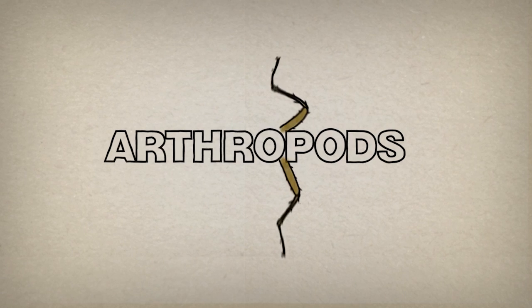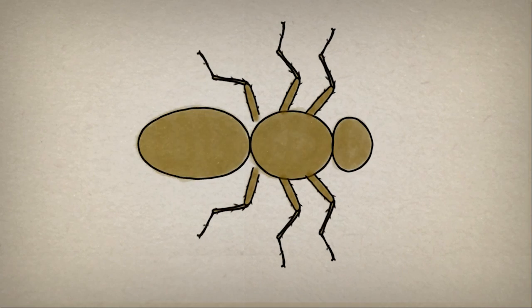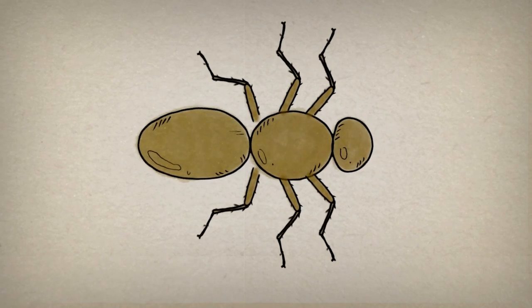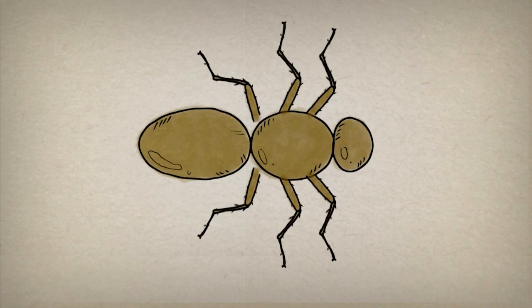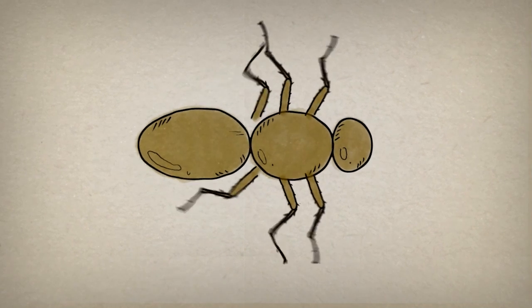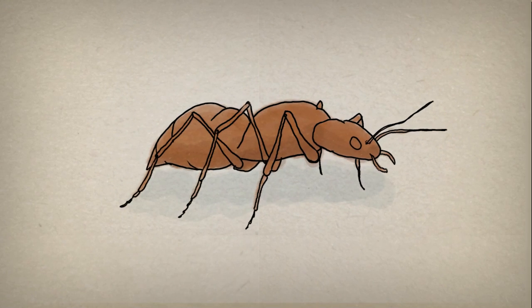Insects are arthropods, which means they have legs with joints, bodies in segments, and a hard outer covering called an exoskeleton, like having your skeleton on the outside, like a suit of armour.